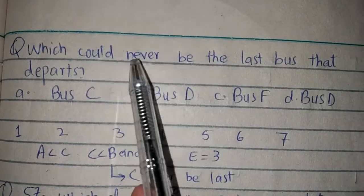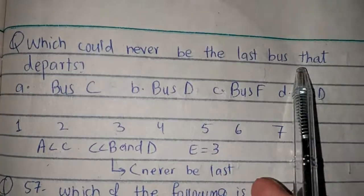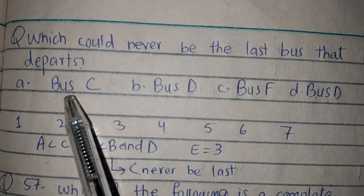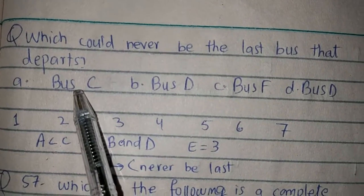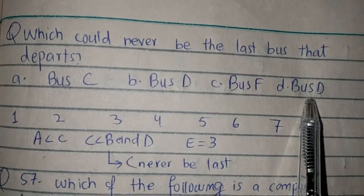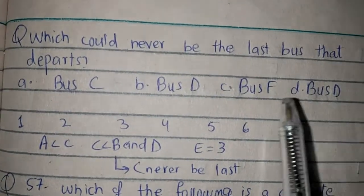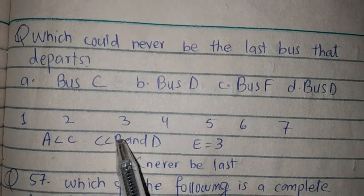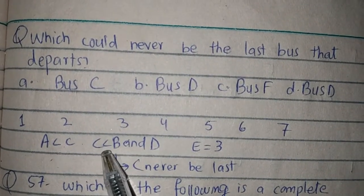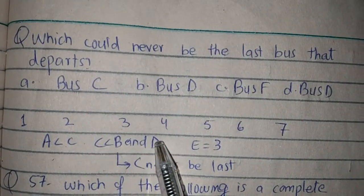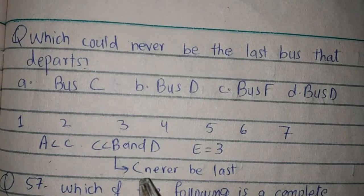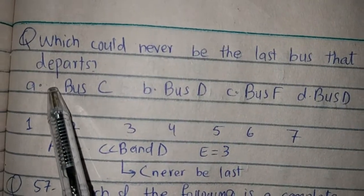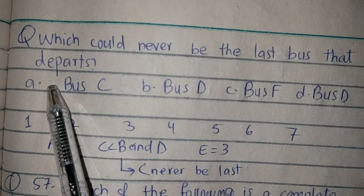Which could never be the last bus that departs? In mein se kaun si bus last mein nahi ja sakti — bus C, bus D, bus F? Aap ne jaldi se second logic dekh leni hai: C less than B and D — matlab C ke baad B and D ne lazmi jaana hai. To C kabhi bhi last mein nahi ja sakti. Option A is ka right hai.